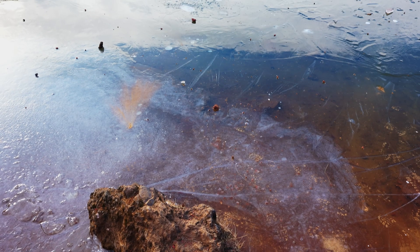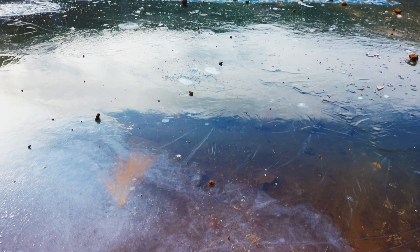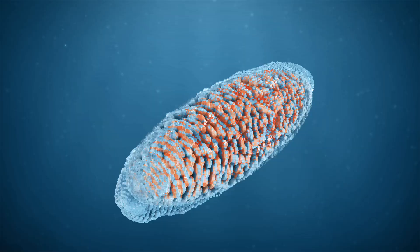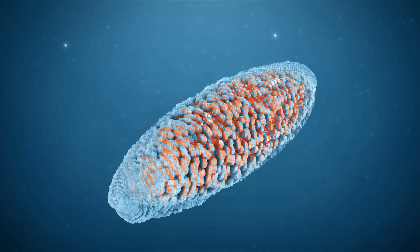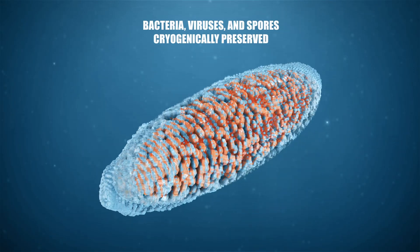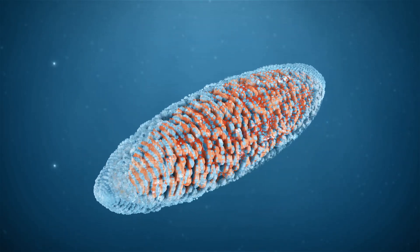In the oldest permafrost layers, mummified bodies of mammoths, reindeer, woolly rhinos, and even humans can be found. With their frozen bodies, live bacteria, viruses, and spores cryogenically preserved for centuries or even millennia.